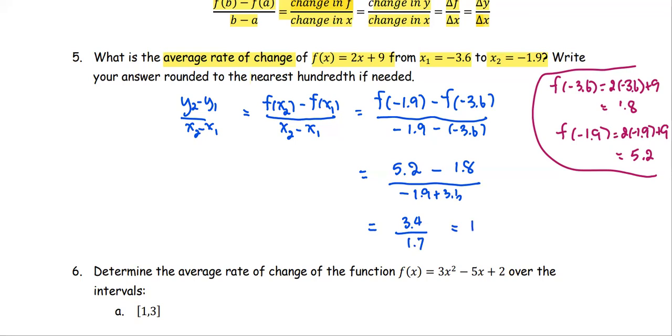So this is already in the decimal place with 1 decimal place, so we don't need to worry about rounding the number. So the answer is 1.7 for the average rate of change of the function from x1 negative 3.6 to x2 negative 1.9.